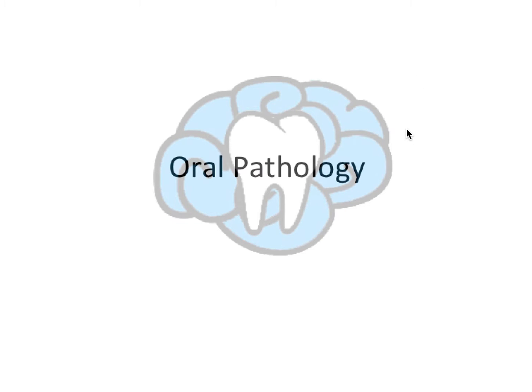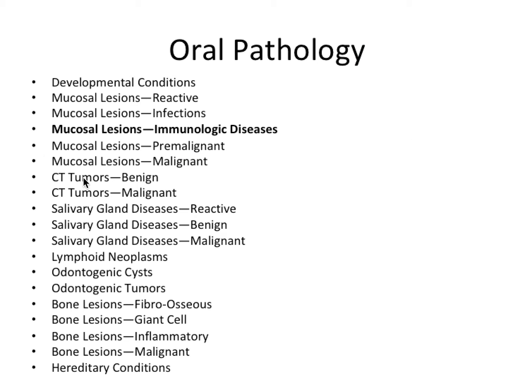Hey guys, it's Ryan. In this video we're going to continue talking about oral pathology and we'll talk specifically about immunologic diseases affecting the oral mucosa. These conditions are related to autoimmune or hyperimmune reactions to known or often unknown stimuli. Autoimmune is when the immune system attacks its own body, whereas hyperimmune is where the immune system goes overboard in response to some stimulus.